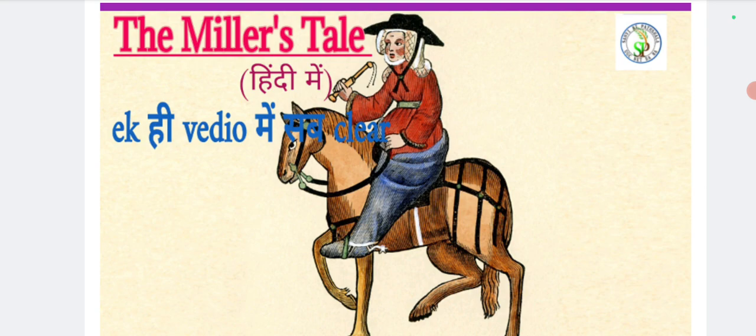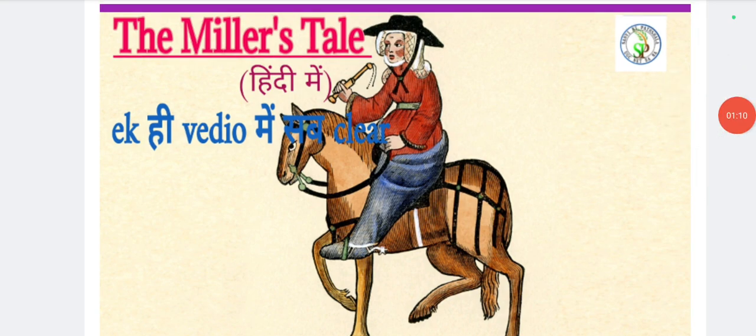So let's start with the Miller's Tale. The Miller's Tale is the second tale of the Prologue to Canterbury Tales. We will see how the beginning of this tale is.